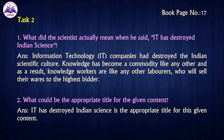Next, book page number 17 — Task 2, a second passage on pages 15 and 16. Read this passage and answer 5 questions. First: What did the scientist actually mean when he said IT has destroyed Indian science? Information technology companies had destroyed the Indian scientific culture. Knowledge has become a commodity like any other, and as a result, knowledge workers are like laborers who sell their wares to the highest bidders.